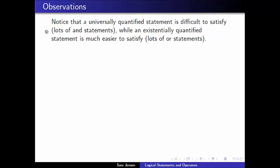It's like a truth table with only one row that has true, true, true, true in it. Every other situation is going to be false. On the other hand, an existentially quantified statement is much easier to satisfy.